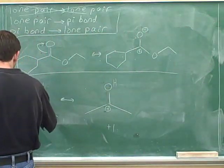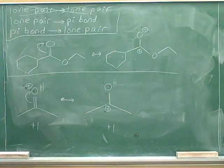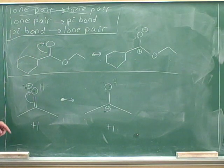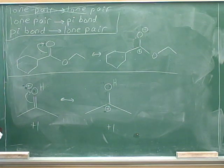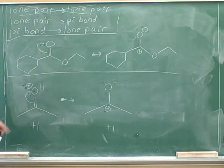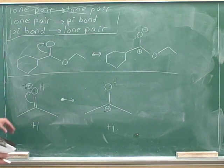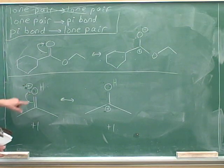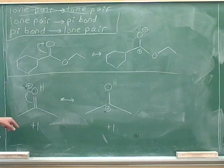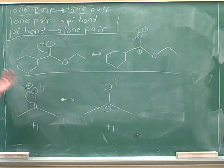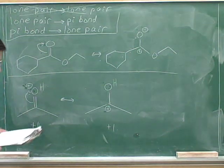Let me make one more point. The convention is that the head of the arrow, when you're gaining a lone pair, should be pointing at the atom — not at the positive charge. So try to get into the habit of drawing the head of this arrow pointing at the atom, not at the positive charge. That's just the conventional way of drawing the arrows.